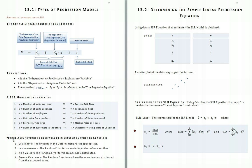There are four model assumptions in Simple Linear Regression. The first one, linearity, is really on the deterministic part of the model. It says the linearity in the deterministic part of the model is appropriate. The last three model assumptions are on the random error.